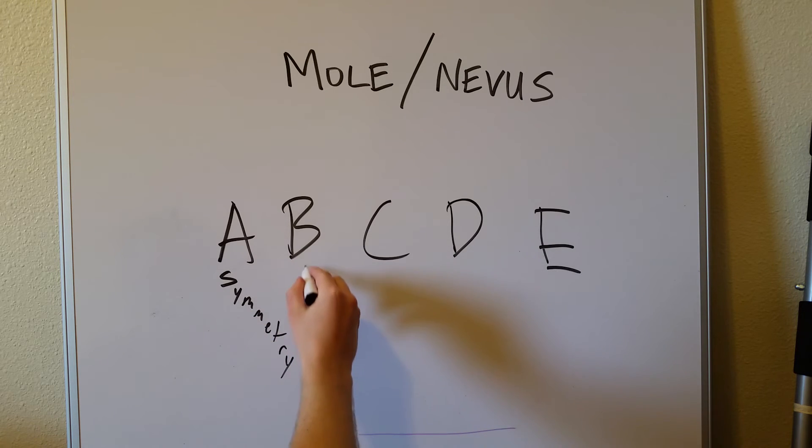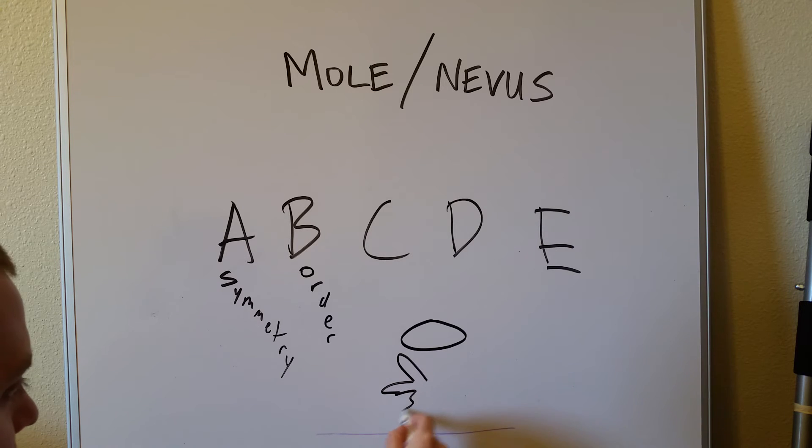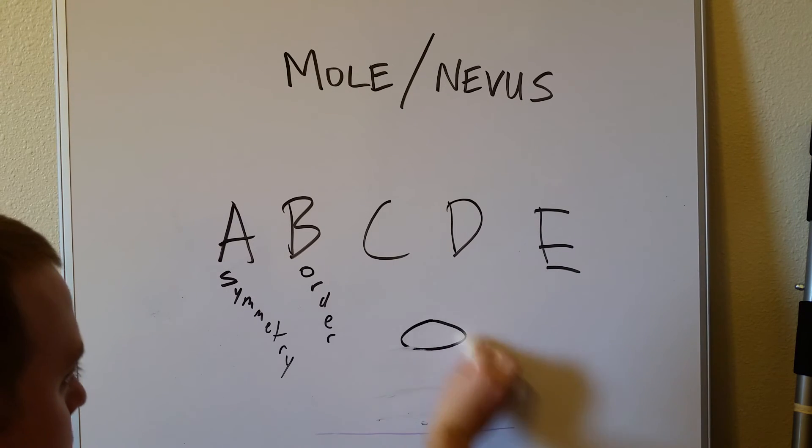Kind of going along with asymmetry, the second part of the mnemonic here, B, is for border. So that's kind of the same thing. Does it have a smooth, even border? Does it have this jagged, spiculated, weird border? So the lower option here is more indicative of a skin cancer or melanoma.